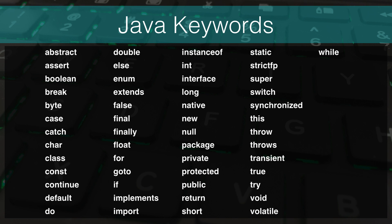The next concept to cover is Java keywords. Keywords are the words that are reserved for the Java language — they are the words you use to write Java programs. The list hasn't changed much since the language was created. Each of these keywords is case sensitive, meaning they all use lowercase letters, and if you substitute a single capital letter, it will not be the keyword anymore. Java is a case sensitive language.